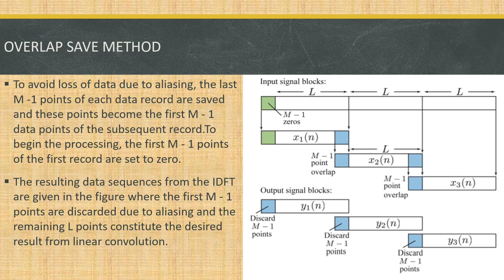In the output signal block, where we use the inverse discrete Fourier transform, the first M-1 points of each output block are discarded due to aliasing, and the remaining points are fitted together to form our overall output sequence, which matches the result from linear convolution.